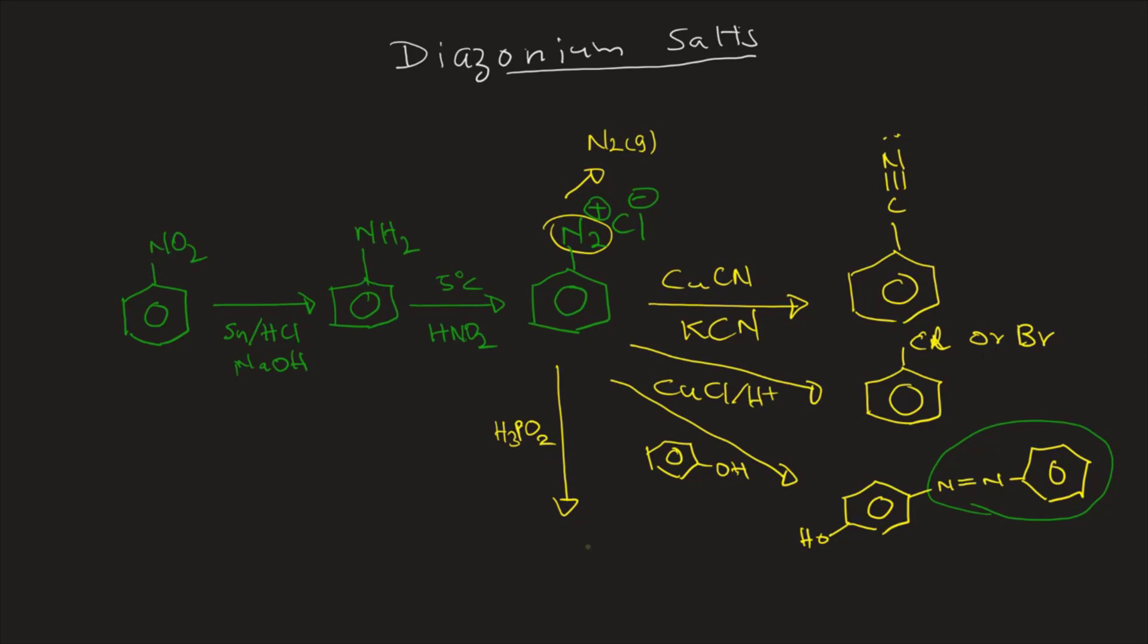Now this is a special reaction. Hypophosphorous acid, H3PO2, that one will give you benzene. So we never make benzene this way, but this is a method we can make benzene.